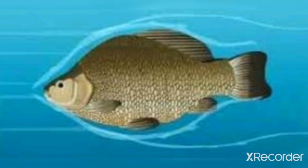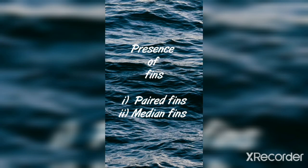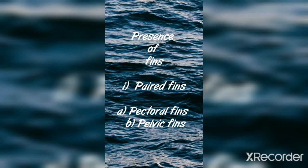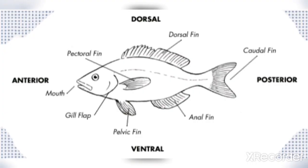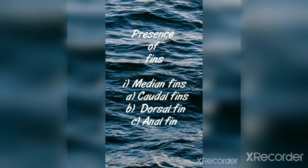The second adaptation is the presence of fins. A fish has two types of fins: paired fins and median fins. There are two paired fins in fishes — one pair of pectoral fins and one pair of pelvic fins. Pectoral fins are situated on each side of the fish just behind the gills, and pelvic fins are located on the ventral surface of the fish.